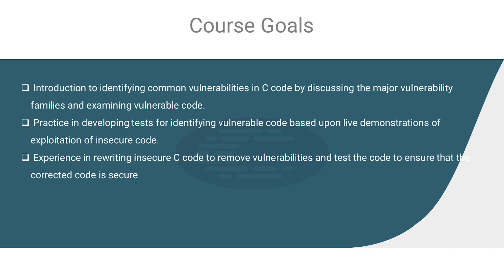And finally, we're going to work on fixing the issues with this C code. Once we know what the vulnerability is and how it can be exploited, we'll look at a revised version of the code that does not contain the vulnerability, talk about how it was fixed, and then attempt to exploit it with those same attacks and see that they no longer work.